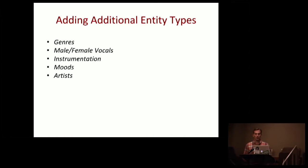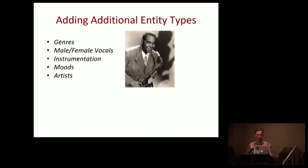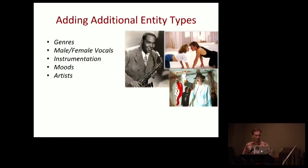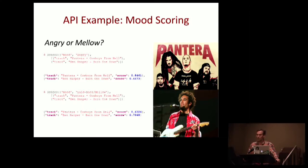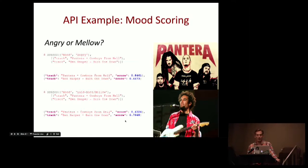We're remapping this space to align closer to human perception rather than just signal processing mapped into the user-item latent space. The theme of this talk is: put as much stuff as you can into a single vector space. Now that we have this acoustic vector space, we can put genres, male and female vocals, instrumentation, different moods, and artists into it as well. Here's an example using our API to score moods — 'angry' or 'mellow' — against two tracks. Pantera scores much higher against 'angry' and Ben Harper scores much higher against 'mellow.'